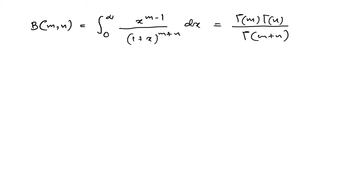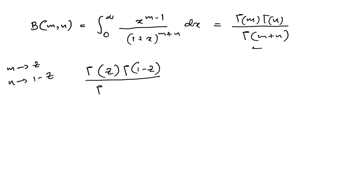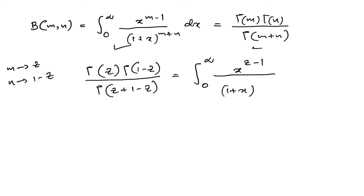In this formula, I am going to replace m by c and n by 1 minus c. So we have gamma(c)·gamma(1-c) over gamma(c + (1-c)), and the integral becomes the integral from 0 to infinity of x^(c-1) over (1+x)^(c+(1-c)) dx. The exponent simplifies: c + 1 - c = 1, so gamma(1) = 1, giving us gamma(c)·gamma(1-c) equal to the integral.